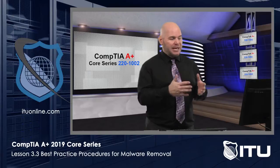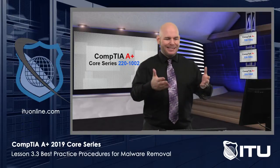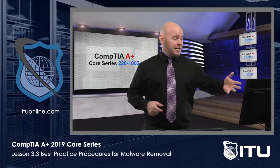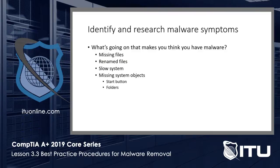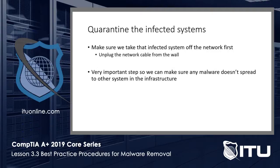We have to think about what makes us identify that it's malware. Your antivirus might be popping off — your McAfee, Norton, Sophos, AVG, Avast, or whatever may be telling you this is malware, or this looks like a suspicious file, or this has been quarantined because it matches a digital fingerprint. That kind of alert will obviously tell you that maybe we do have some malware.